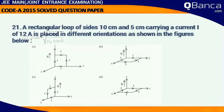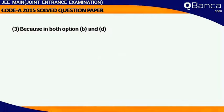A rectangular loop of size 10 centimeter and 5 centimeter carrying a current i of 12 amps is placed in different orientation as shown in the figure. Answer is in both options B and D.